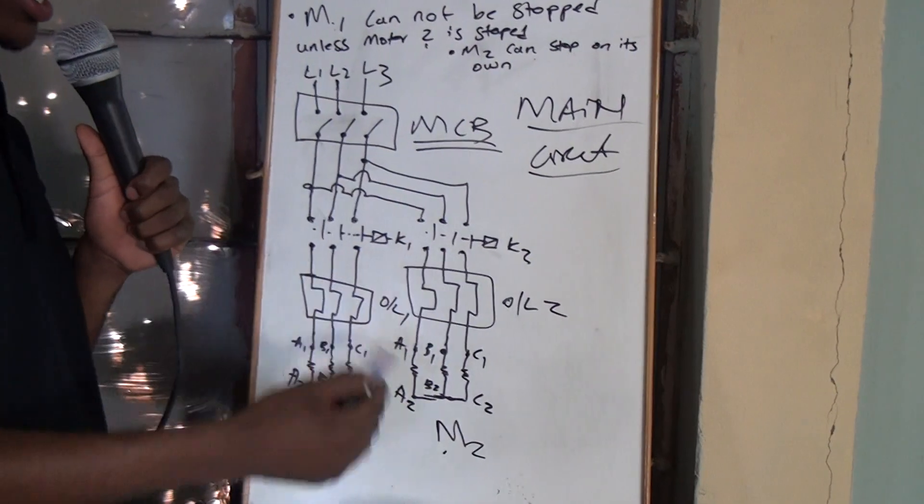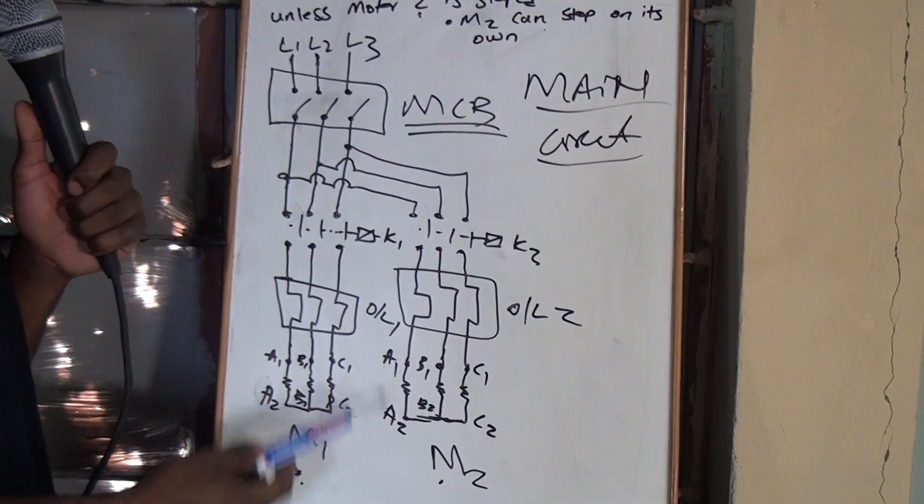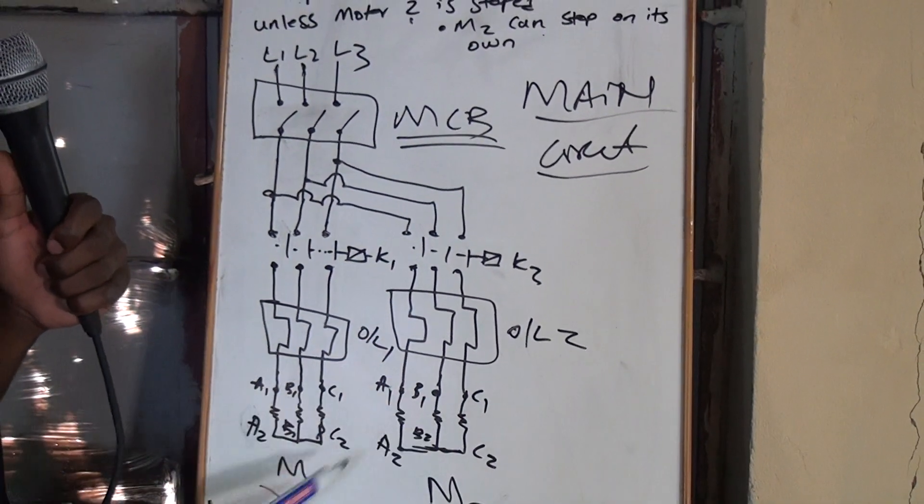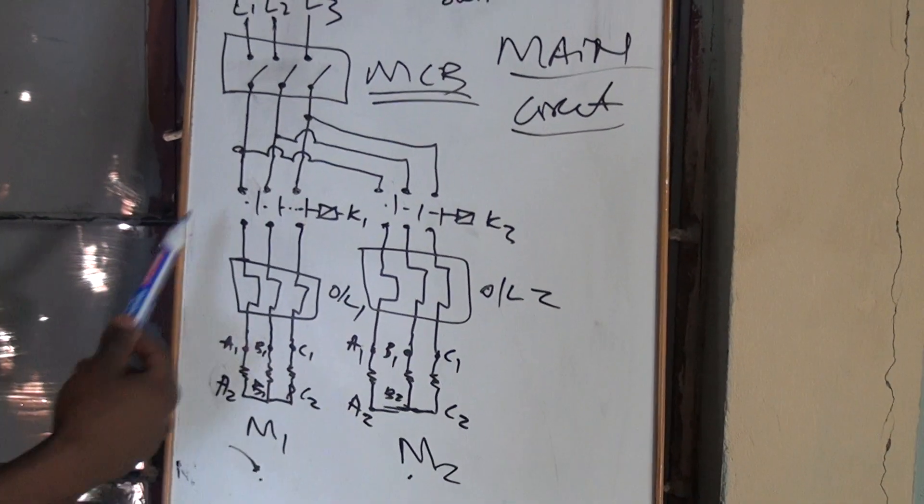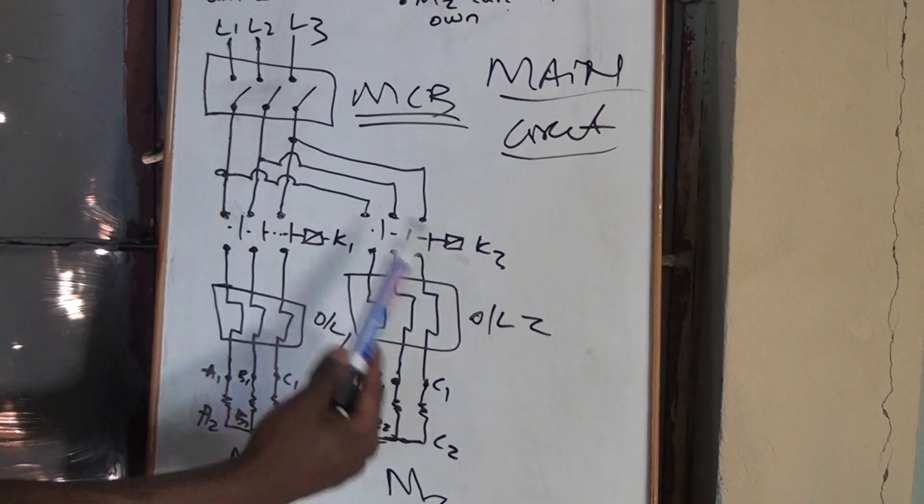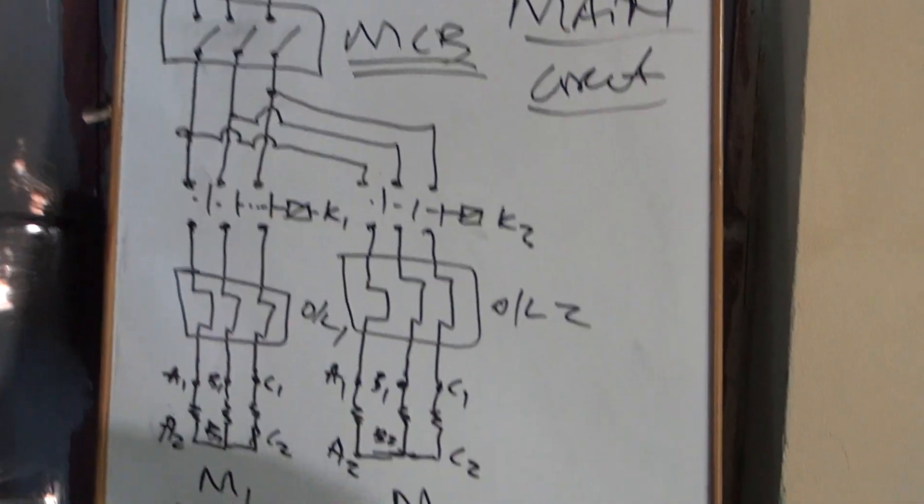So this is the control circuit. No, this is the main circuit. Main circuit remains the same most of the times. You can pause the video. Look at the video. You can also look at the previous video for this main circuit. Main circuit remains the same.